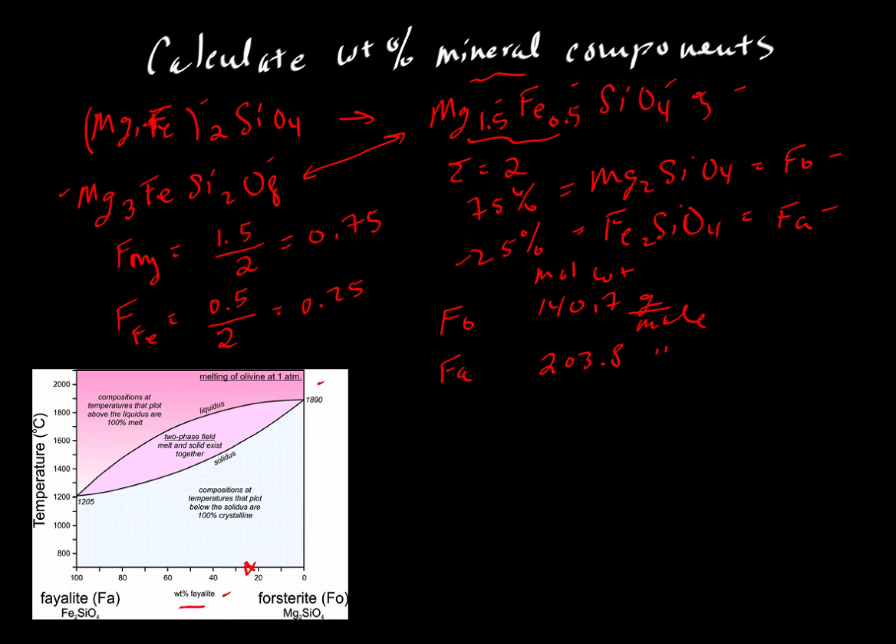If we want to get the weight percent of fayalite, we can get the weight percent of both by taking the molecular proportions and multiplying them by these weights. We'll take 140.7 and multiply by 0.75. We have 75% atomically forsterite. We'll do the same for fayalite, taking 203.8 and multiplying by 0.25.